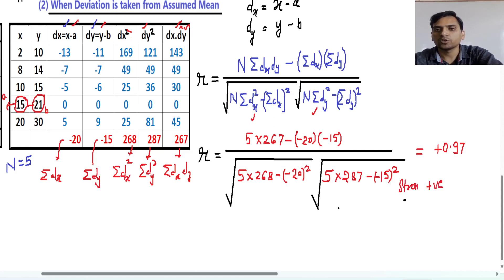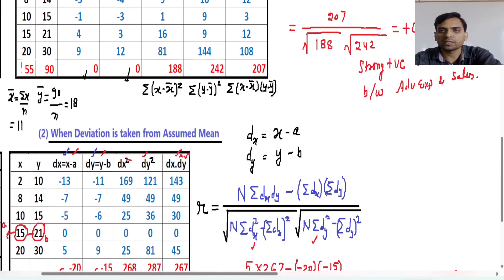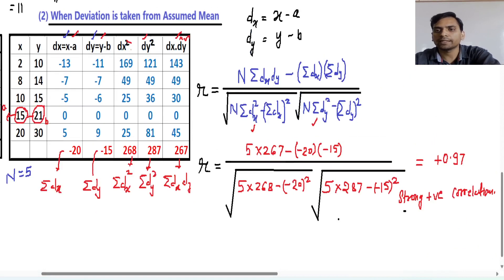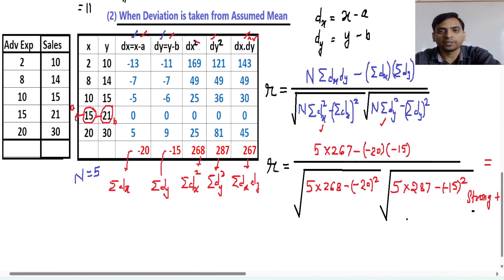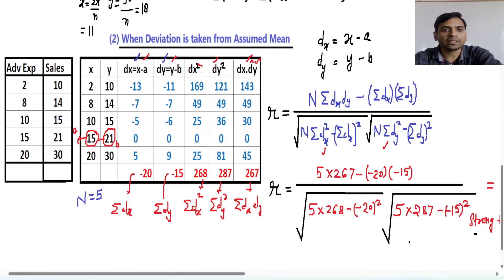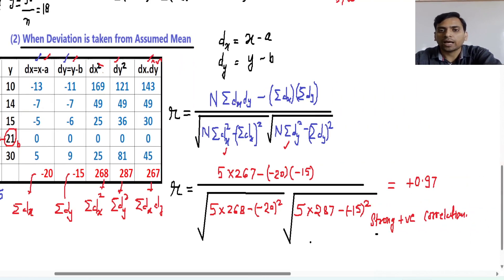This means there is a strong positive correlation between advertisement expense and sales. Comparing with the previous method, both give r equal to 0.97, confirming that you can apply any method. However, when x-bar and y-bar are not integers, please try to avoid the first formula, because decimals make the calculations lengthy and time-consuming. With the assumed mean method, the digits are small and you can calculate directly without a calculator. So this second method is the best.